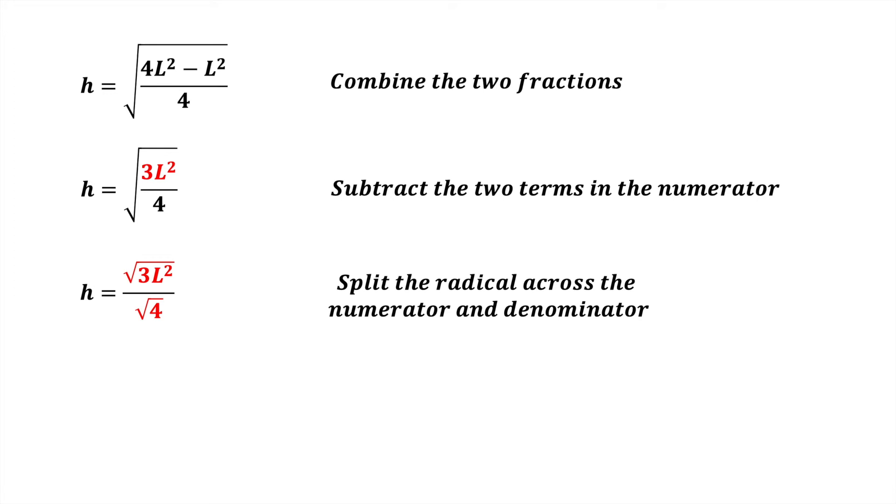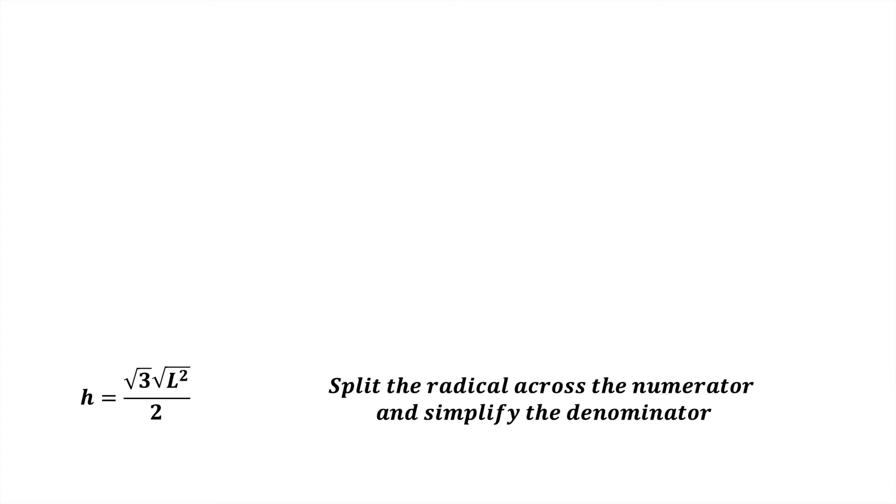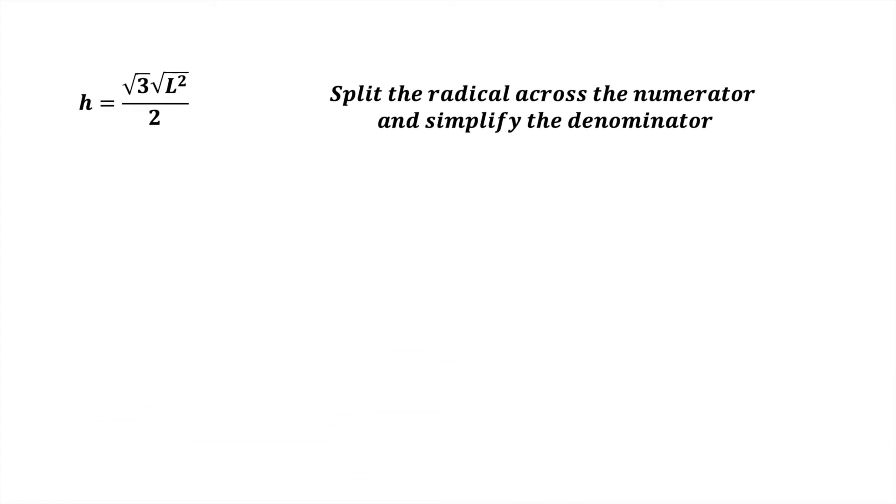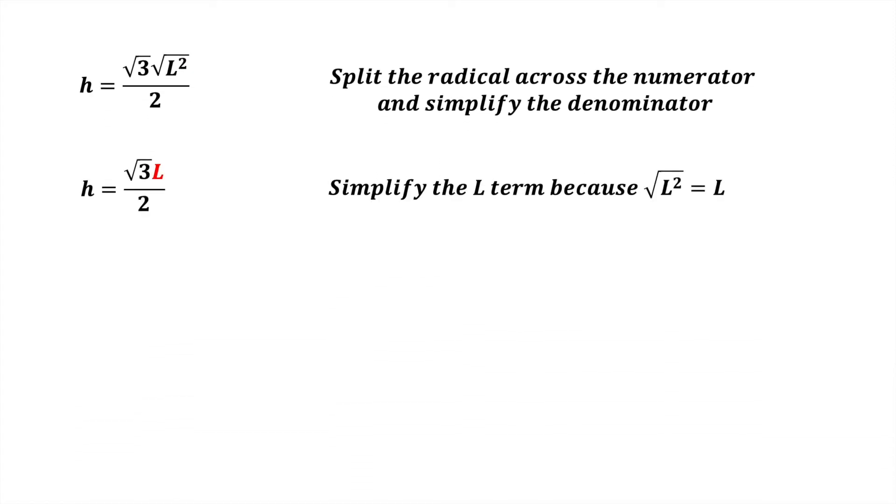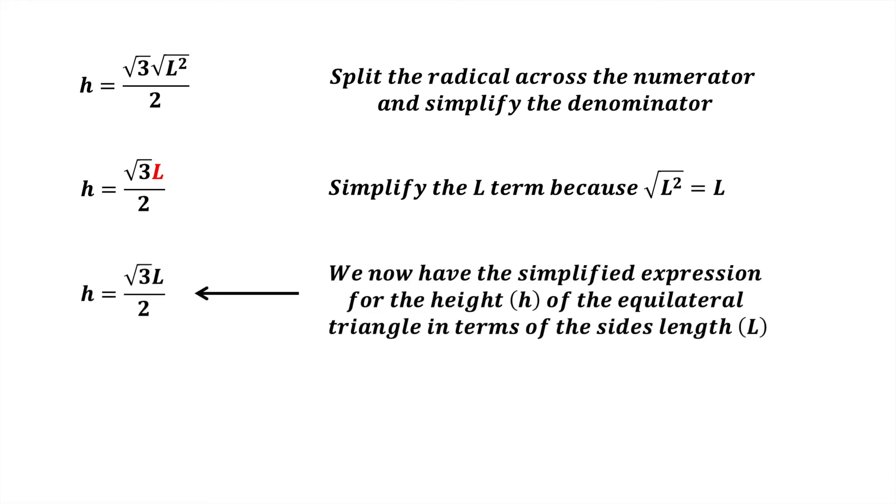Subtracting the two terms of the numerator simplifies the numerator to 3L squared. Now we split the radical across the numerator and the denominator. We then split the radical across the numerator and simplify the denominator. We can now simplify the L term because the square root of L squared equals L. We now have the simplified expression for the height of the equilateral triangle in terms of the side length L.